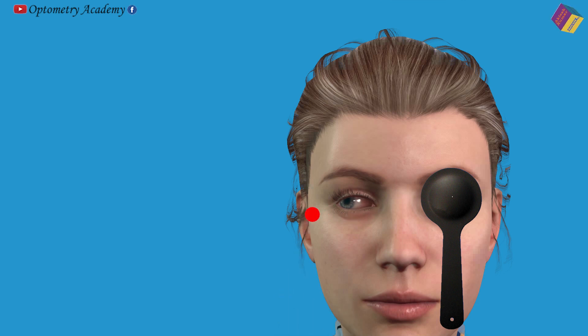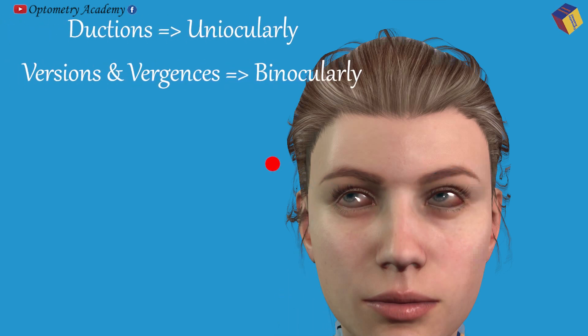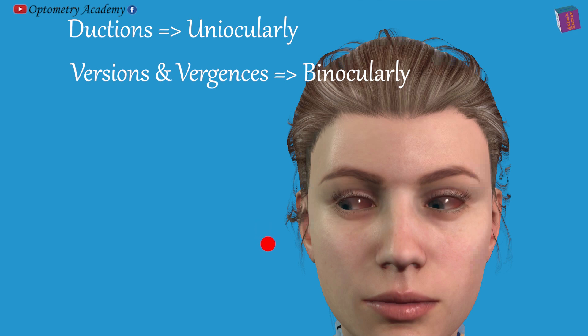The eye movements when tested uniocularly are called ductions, and when tested binocularly are called versions and vergences.